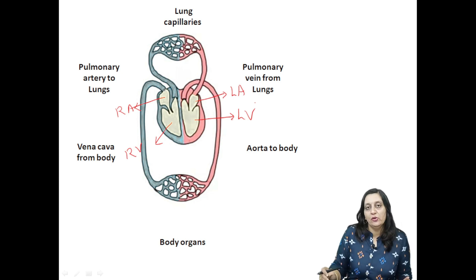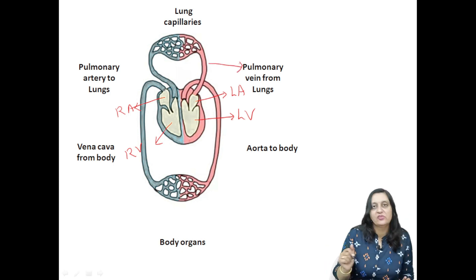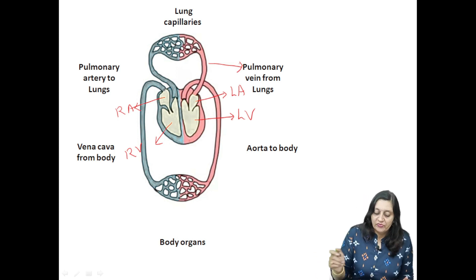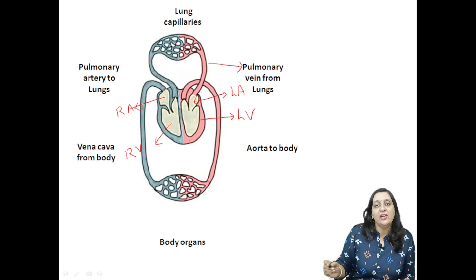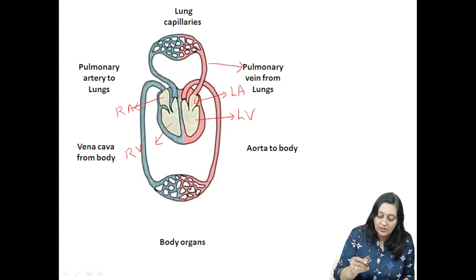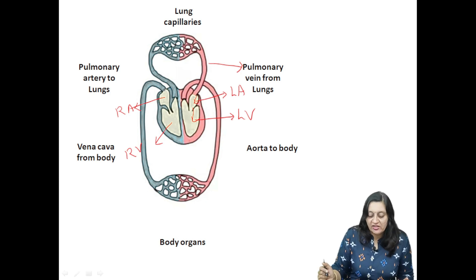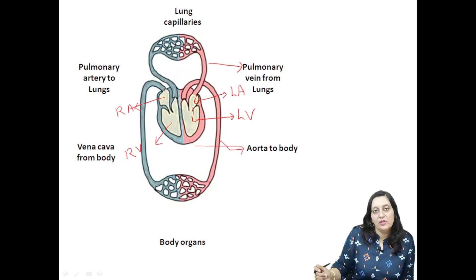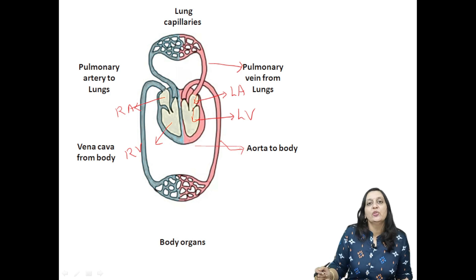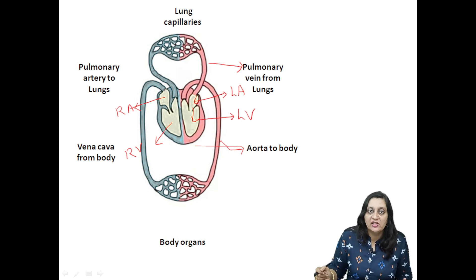Now let us understand the flow of blood. The pulmonary vein comes from the lungs carrying oxygenated blood and pours this oxygenated blood into the left atrium. From the left atrium, in a regulated way, this blood enters the left ventricle. From the left ventricle, via the aorta, this blood is made available to each and every cell of the body. The aorta is the largest artery of the body, and it forms a network of arteries which circulates this blood in our body.